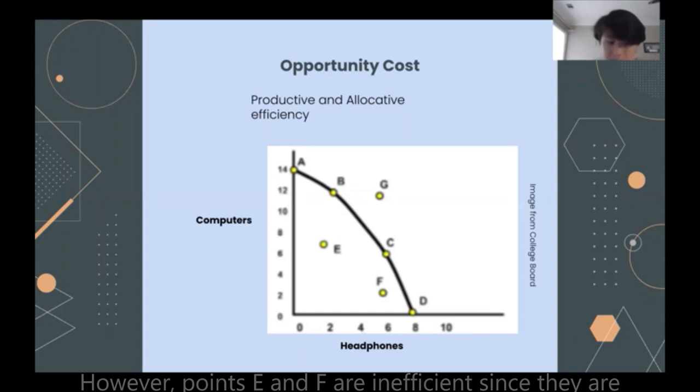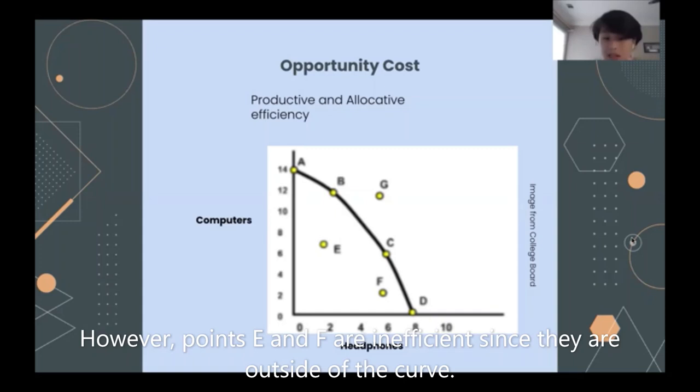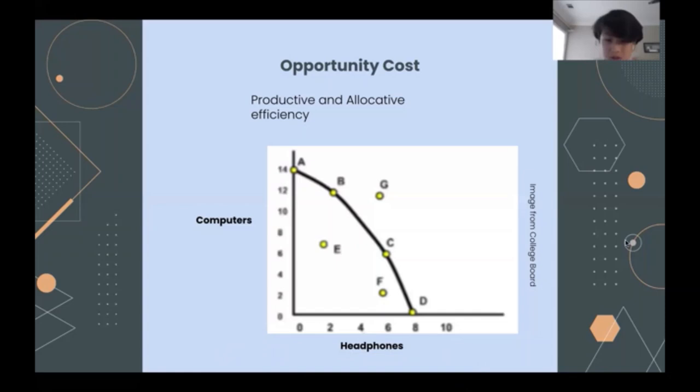However, points E and F are inefficient since they are outside the curve, while point G is unattainable at the moment because it is out of your reach. And just a disclaimer, all graphs and tables for opportunity cost are either referenced or taken from College Board or other sources. I source them and I do not own it. And yeah, thank you for listening.